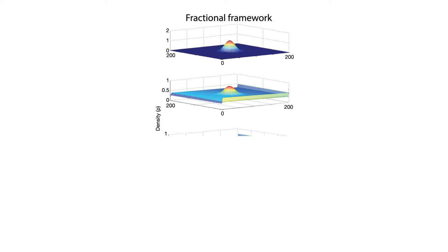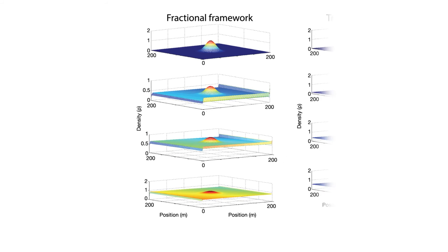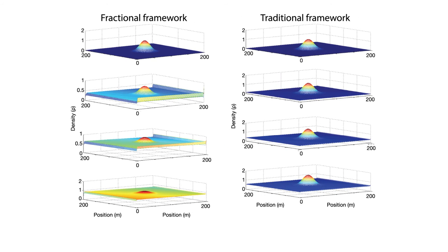Simulations show that a crowd in a confined area tends to spread out and fill the space much faster in the fractional framework than in the traditional framework. This finding is in line with how people actually behave in crowded situations.